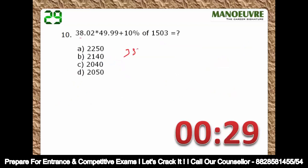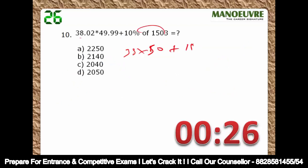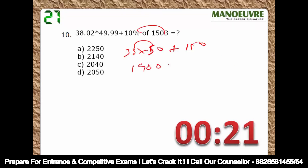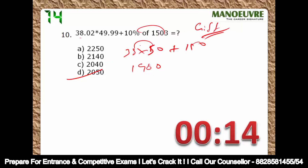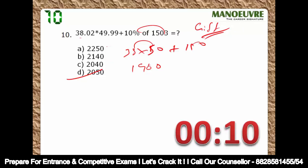This is 38 × 50 plus 10% of 150. 5 × 8 = 40 plus 4, 5 × 3 = 15, so 19 + 150 = 2050. Great — this is too easy, this is a gift actually. Calculation and percentage — very straightforward.